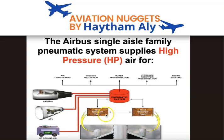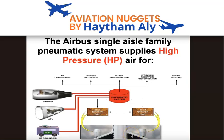The Bleed Monitoring Computer also monitors leak detection loops on the air supply ducts. These ducts carry air at high temperature and pressure throughout the aircraft, such as for wing anti-ice. The BMC monitors wing leak detection loops, APU supply ducts, and bleed duct leak detection loops, and will shut down the bleed system if a leak is detected.